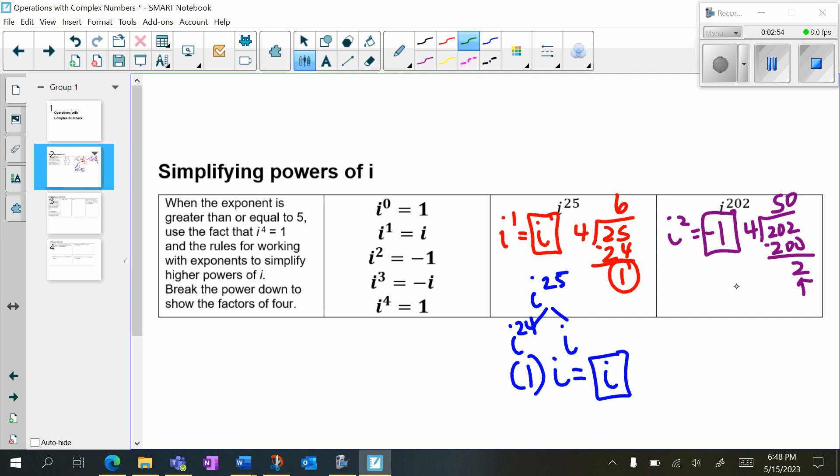Now, let's try it the other way. If I have i to the 202, I want to break it down so one of my exponents is divisible by 4. So the closest one would be i to the 200 times i squared, right? Because you would add your exponents to get 202. So 4 goes into 200 evenly. So that's just 1. And then i squared, which we know is negative 1.